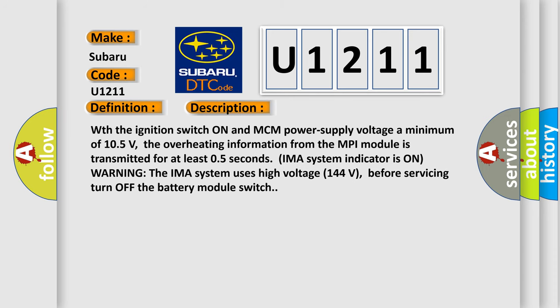With the ignition switch on and MCM power supply voltage a minimum of 10.5 volts, the overheating information from the MPI module is transmitted for at least 0.5 seconds. IMA system indicator is on warning. The IMA system uses high voltage 144 volts. Before servicing, turn off the battery module switch.